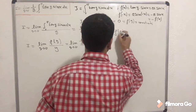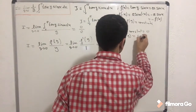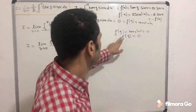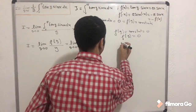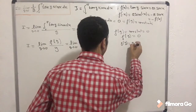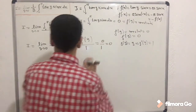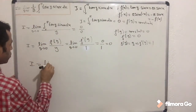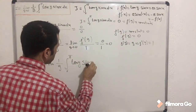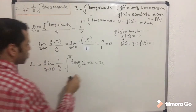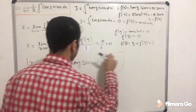Applying L'Hôpital's rule: the limit of f(y) over y as y approaches zero equals the limit of f'(y) over 1. Since f(y) is the constant zero, differentiating gives f'(y) = 0. For g(y) = y, we get g'(y) = 1. So the limit equals 0 over 1 = 0. Therefore, I = lim(y→0) [1/y · ∫₀^π tan(y)·sin(x) dx] = 0.